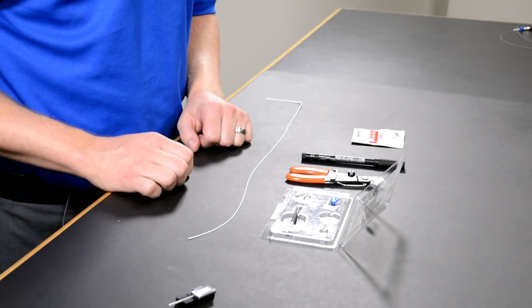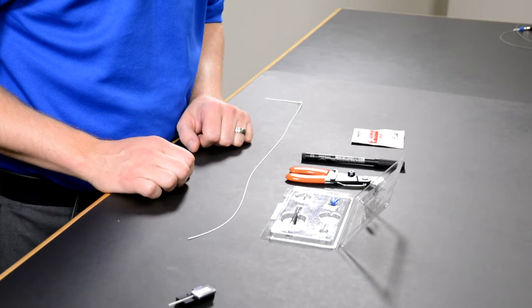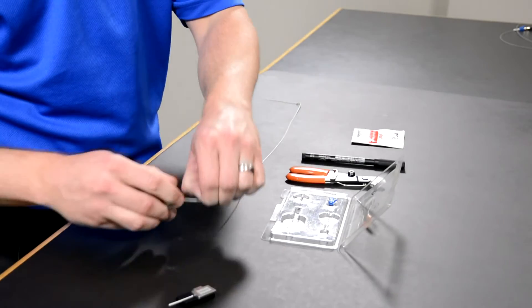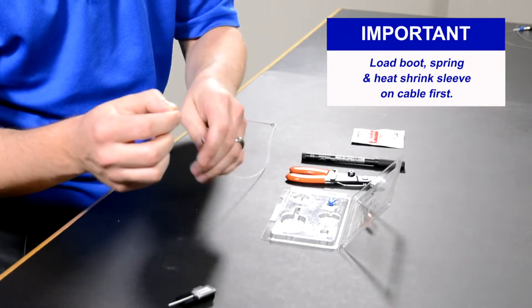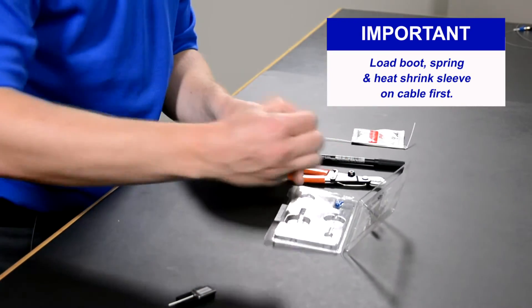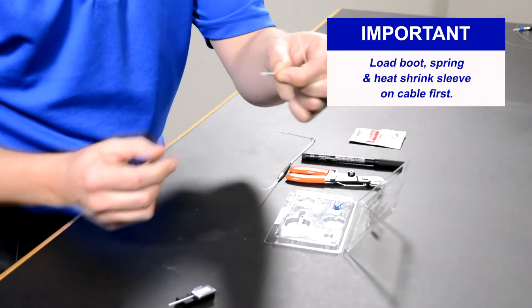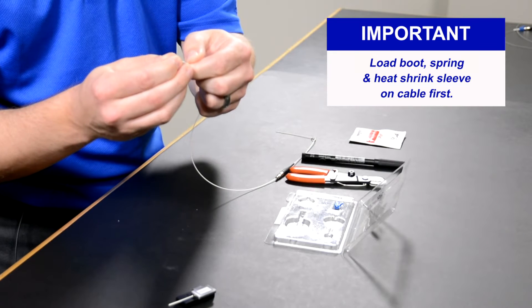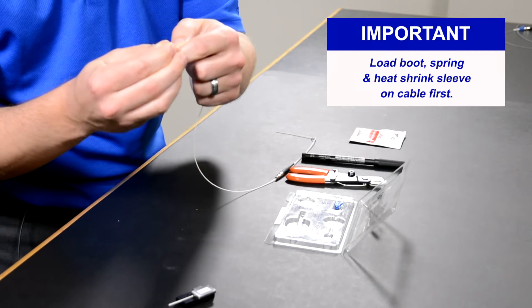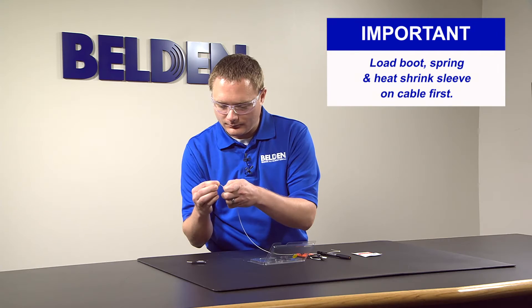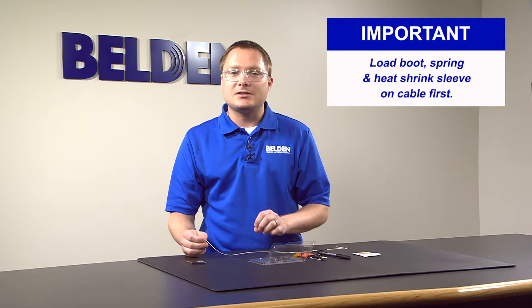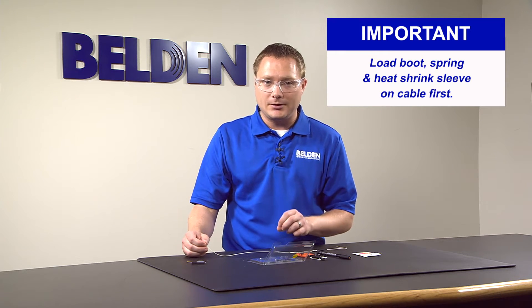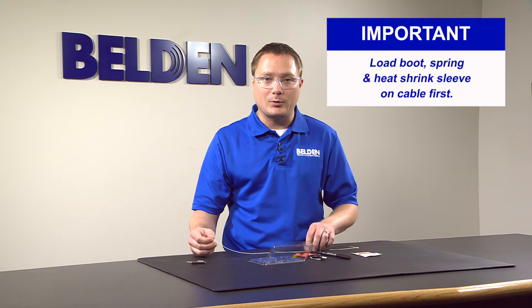Before we cleave the fiber, we need to prepare it. The first thing we need to do is put the boot on. We will slide the boot on the fiber, slide that all the way down, and then we want to take the heat shrink tube that contains the spring and slide that on the fiber as well. We slide that down next to the boot. This is an important but easy step to forget, so please remember to put those on before we mark the fiber.